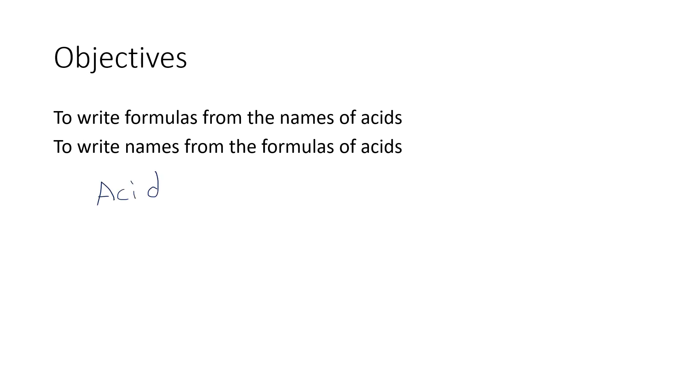you'll find that the very first column on that nomenclature summary flowchart is all about acids. The next column was alkanes, then covalent or molecular compounds, and then the last column was for ionic. So we are finally going back and picking up that acids column now. We're going to learn how to write formulas from names and how to write names from formulas.